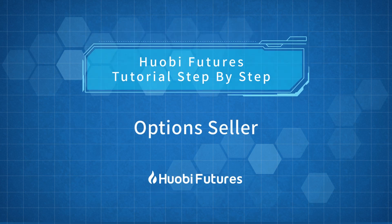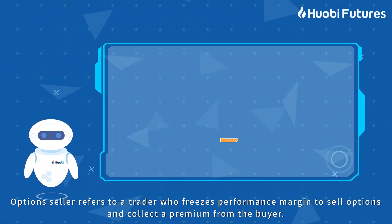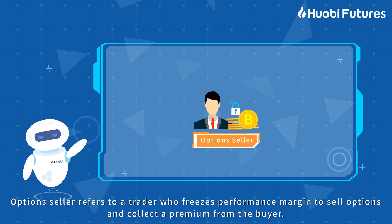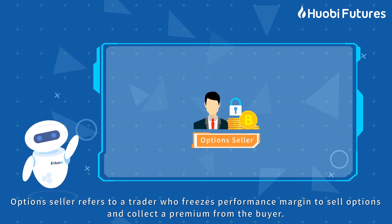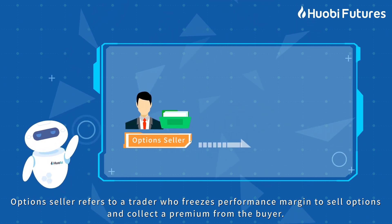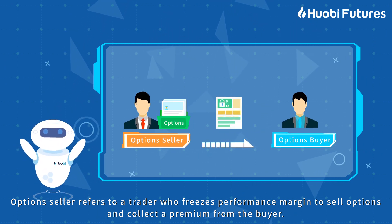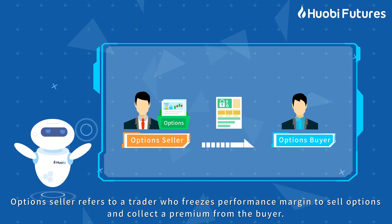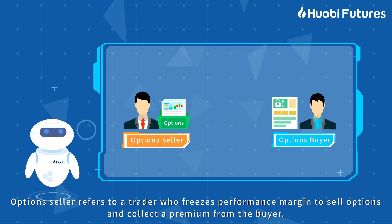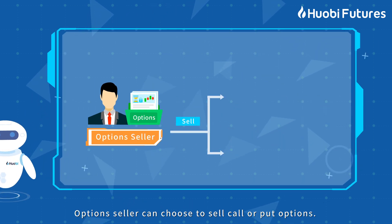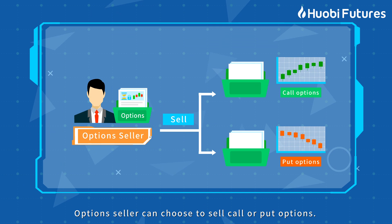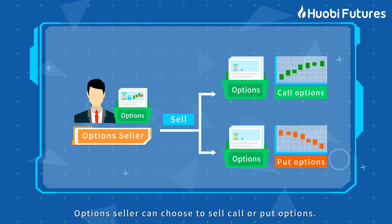Option Seller refers to a trader who posts performance margin to sell options and collect a premium from the buyer. An option seller can choose to sell call or put options.